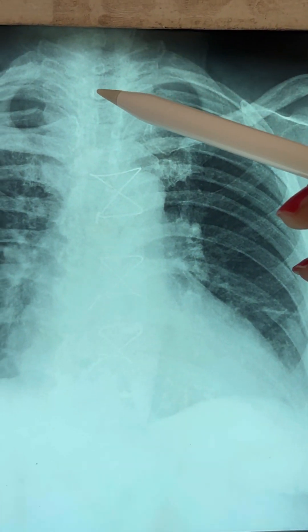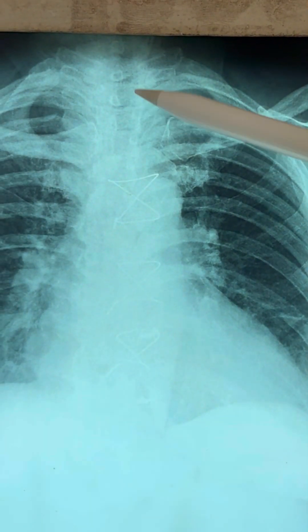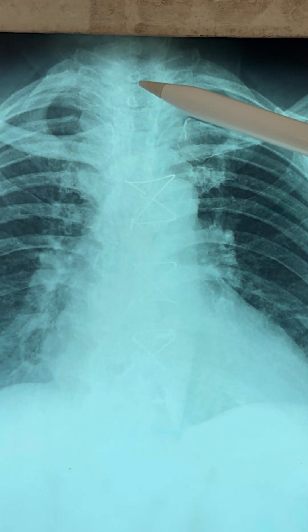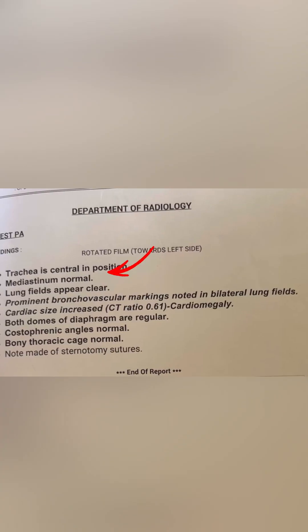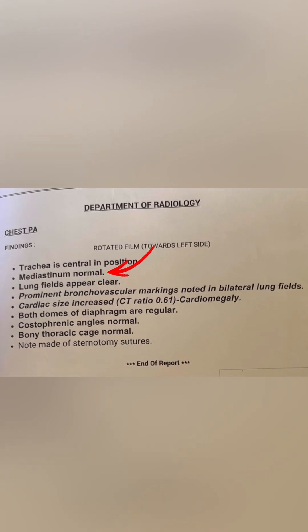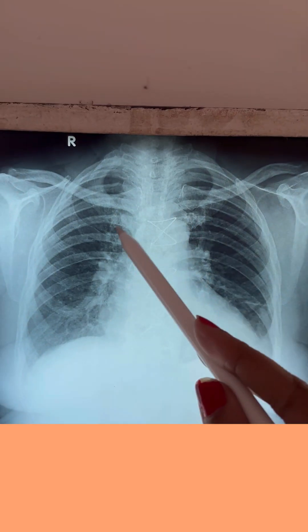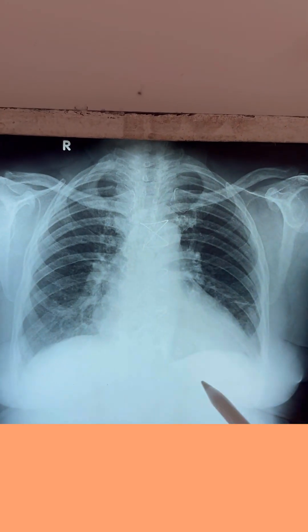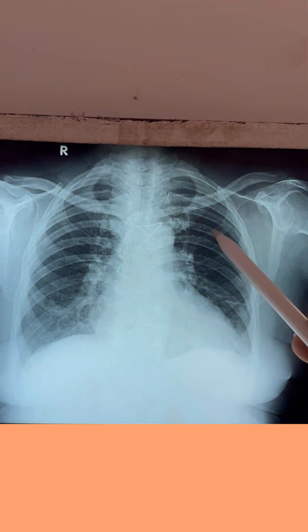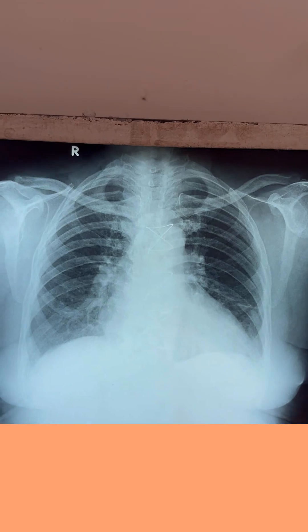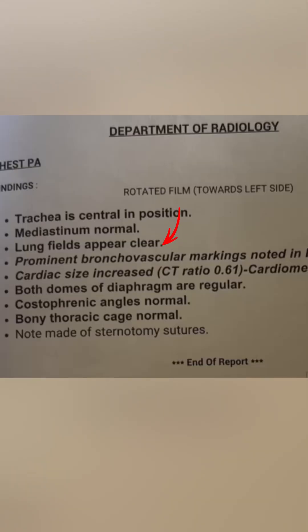First, you have to identify the trachea in its midline — you can identify it by the tracheal rings. The second structure is the mediastinum, which is where the heart lies, and you have to check its border.